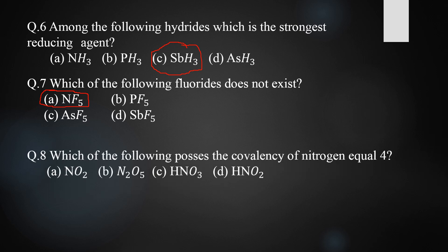Question eight: which of the following possesses a covalency of nitrogen equal to 4? The covalency can be determined by drawing the structure of the nitrogen oxides. The correct answer is N2O5. In N2O5, nitrogen forms only four bonds with oxygen — three covalent bonds and one coordinate bond, in which nitrogen donates its two electrons to oxygen. So in N2O5 the covalency of nitrogen is four.